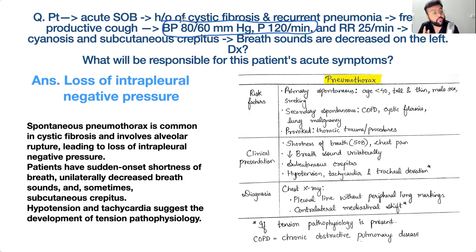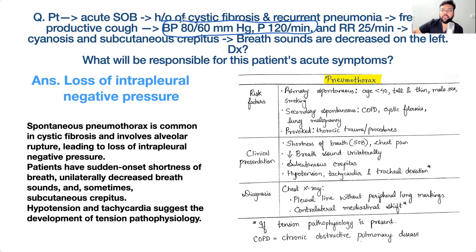These are golden vitals: hypotension with tachycardia means something serious is happening, especially in hemorrhagic shock. This is tension pneumothorax. The patient already has cystic fibrosis and significant lung damage, so is this primary or secondary pneumothorax? It is secondary — there is a predisposing lung condition, specifically cystic fibrosis.